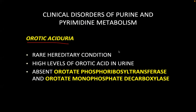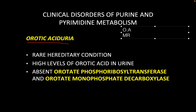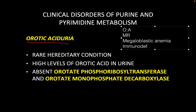Orotic aciduria is associated with mental retardation, megaloblastic anemia, and immunodeficiency, along with high levels of orotic acid in the urine. It results from the absence of orotate phosphoribosyltransferase or orotate monophosphate decarboxylase, leading to excess orotic acid in the urine.